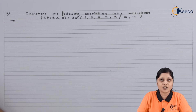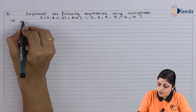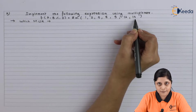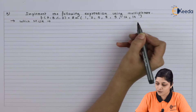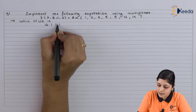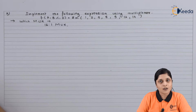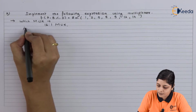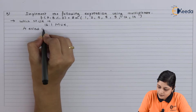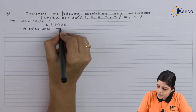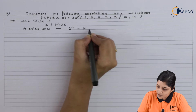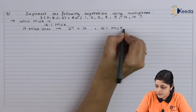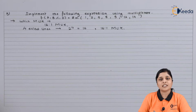From the given expression you have to identify which MUX you will use. If you see the minterms, 14 is the last minterm, so directly you can write that a 16-to-1 MUX can be used. There are four inputs, meaning four select lines, and 2 to the power 4 gives you 16, so again we use a 16-to-1 MUX.